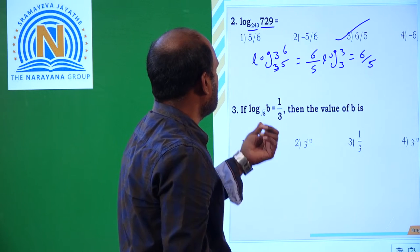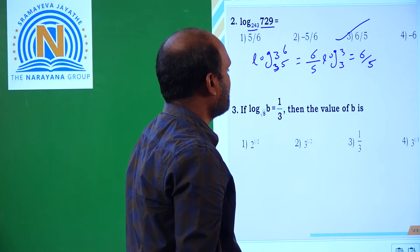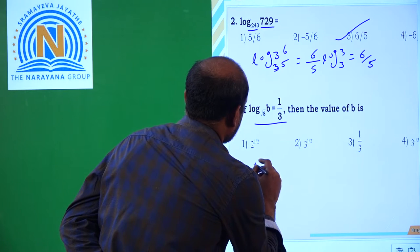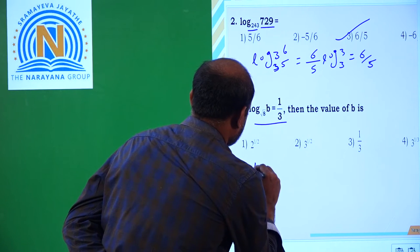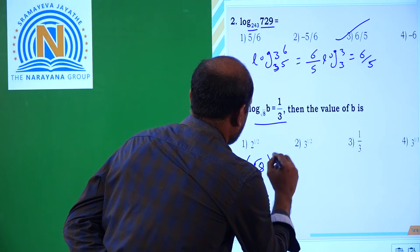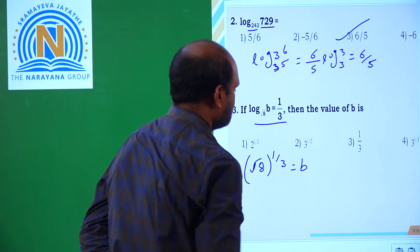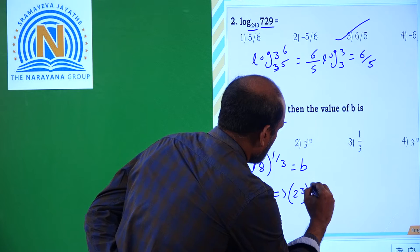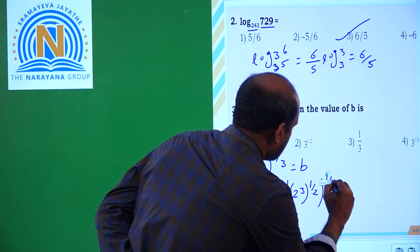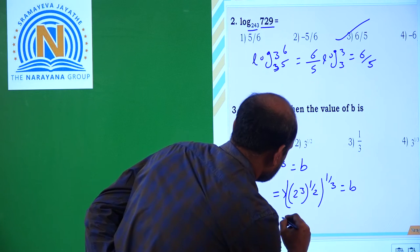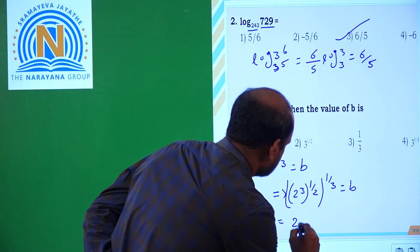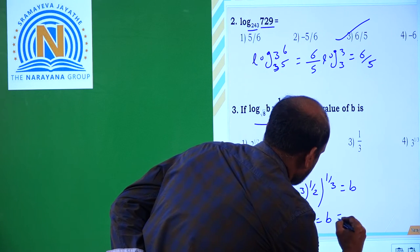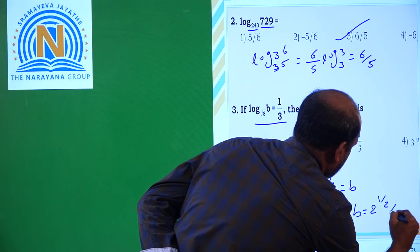Now, if log B base root 8 is equal to 1 by 3, then the value of B is? By definition of logarithm, root 8 whole power 1 by 3 is equal to B. That implies 8 is 2 cubed, so it becomes 2 cubed whole power 1 by 2, whole power 1 by 3, which equals 2 power 3 by 6.